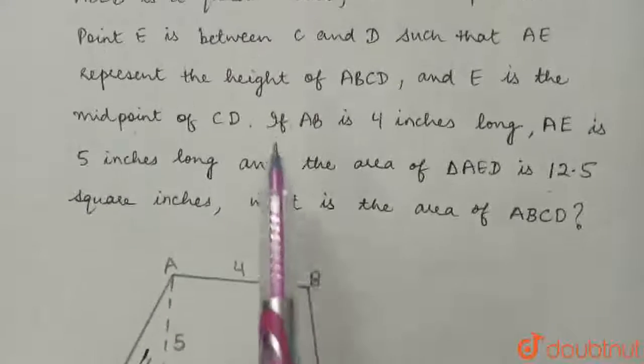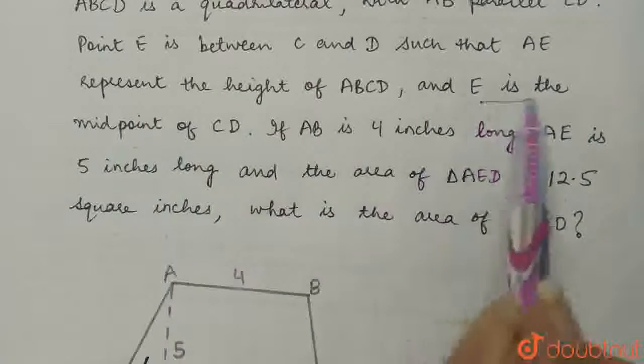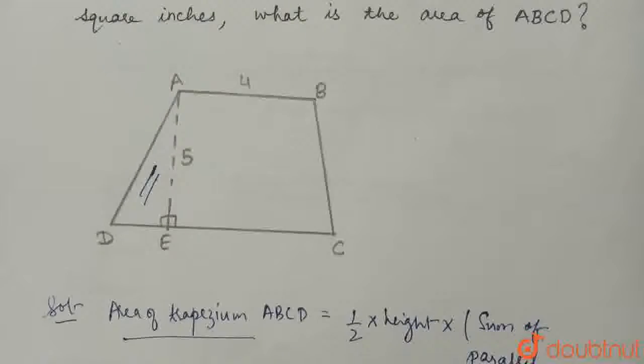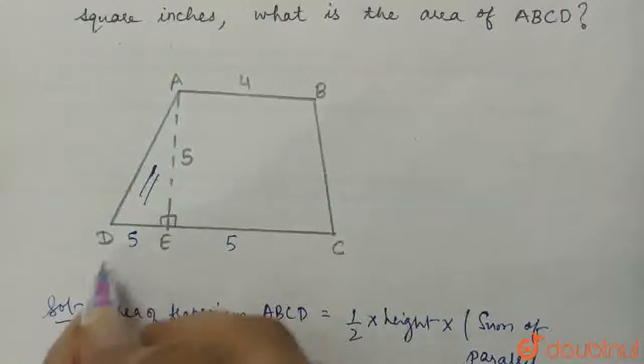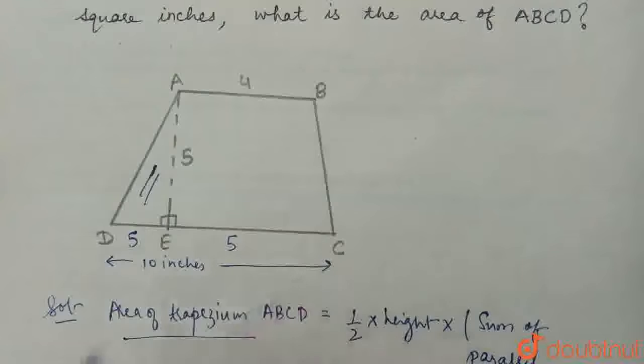We are given that E is the midpoint of CD. Midpoint means it divides into two equal halves. If this is 5 inches, then this is also 5 inches. So the whole becomes 10 inches. CD equals 5 plus 5, which is 10 inches.